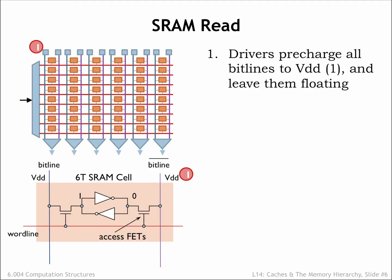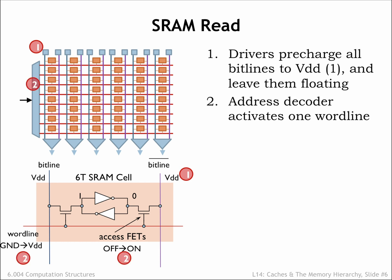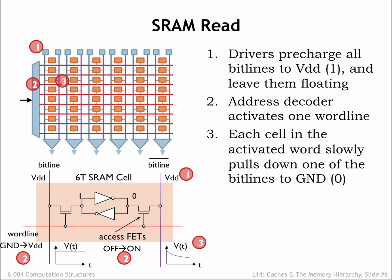During a read operation the drivers first recharge all the bit lines to VDD — in other words a logical 1 value — and then disconnect, leaving the bit lines floating at 1. Then the address decoder sets one of the word lines high, connecting a row of bit cells to their bit lines. Each cell in the selected row then pulls one of its two bit lines to ground; in this example it's the right bit line that's pulled low.